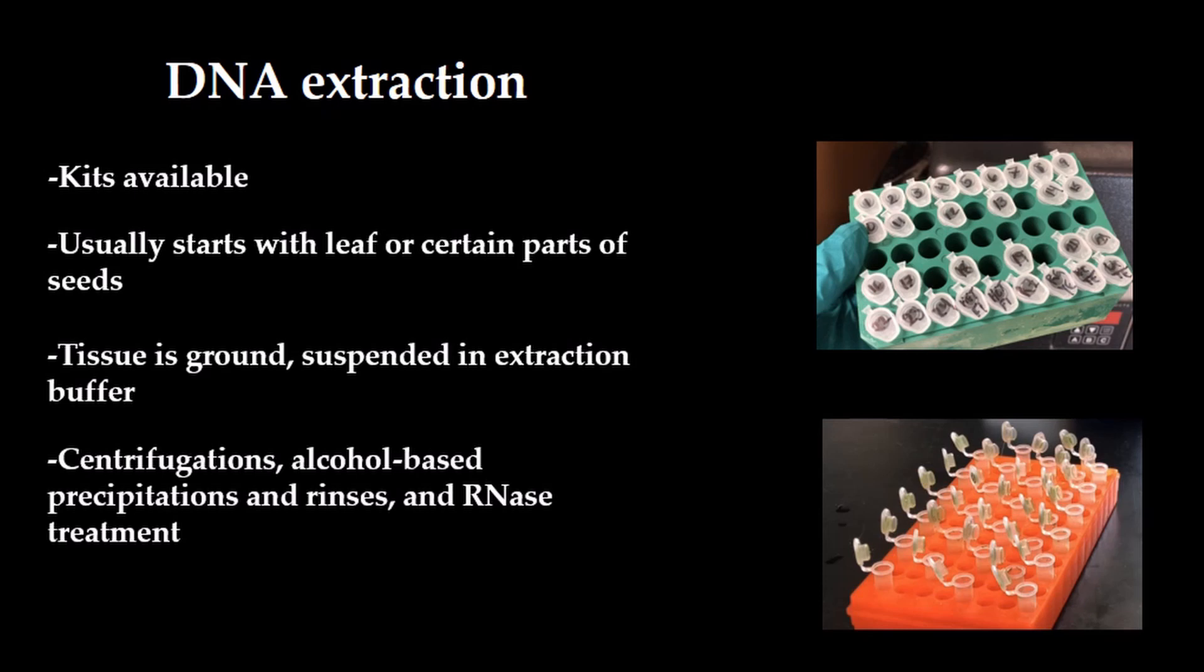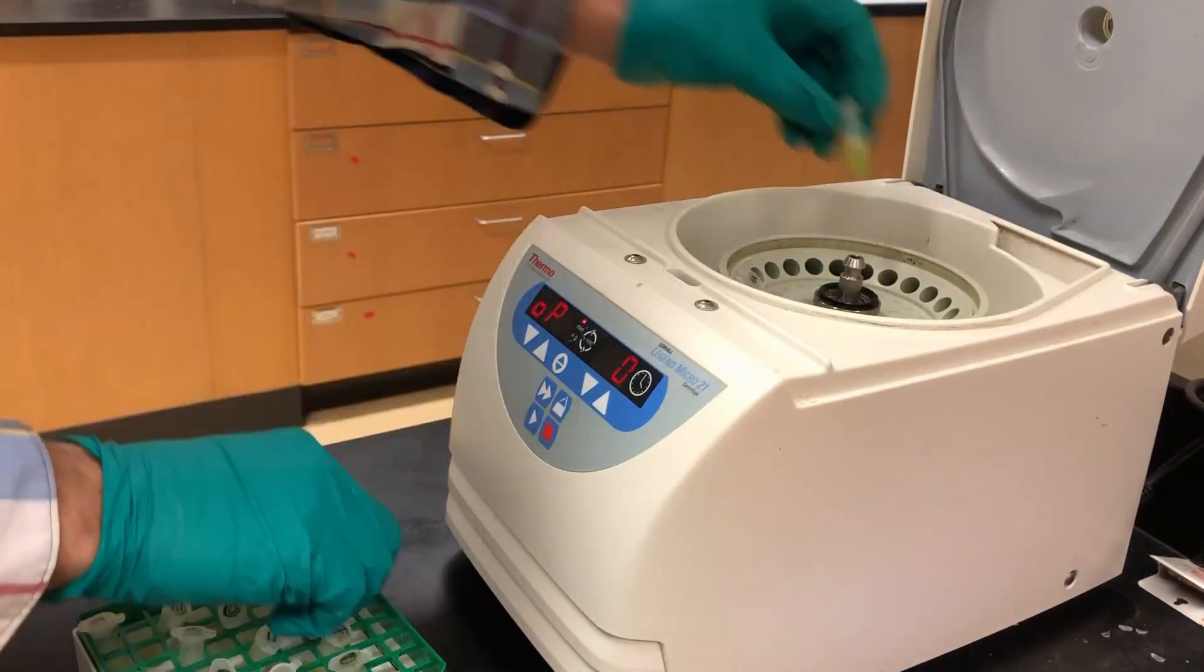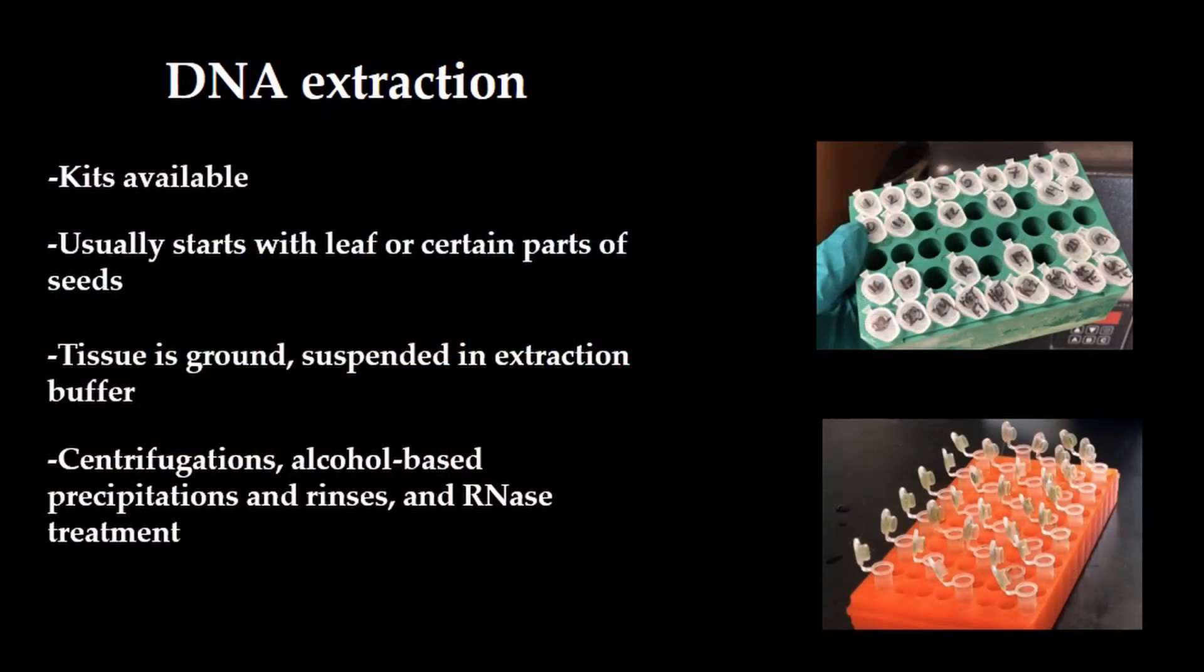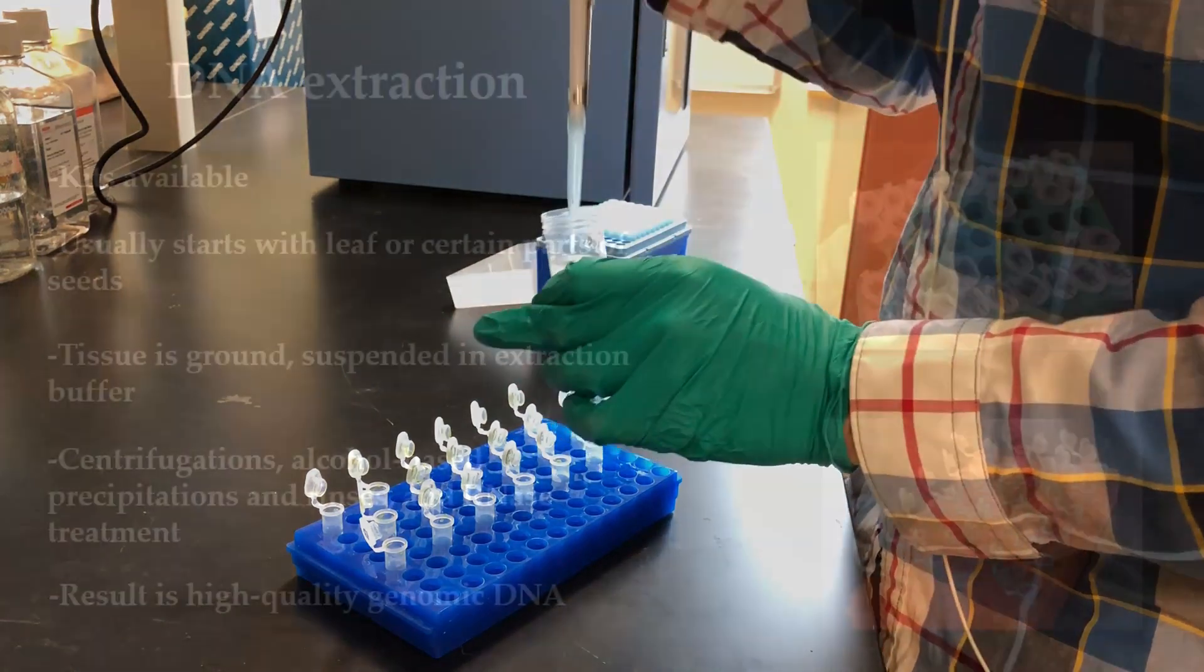After this, there are several rounds of centrifugation, alcohol-based rinses, and RNase treatments to remove any residual RNA in the sample. The final product is high-quality genomic DNA, which can be used for a variety of purposes.